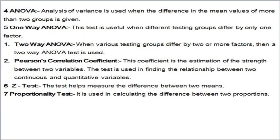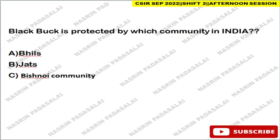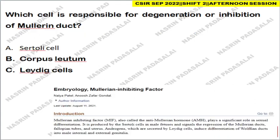The next question: the blackbuck is protected by which community of India? The blackbuck is protected by the Bishnoi community. Bishnoi is a village located in Rajasthan where a large number of blackbucks and peacocks can be seen — they are an integral part of the community and nobody will harm them. The blackbuck is also called the Indian antelope.